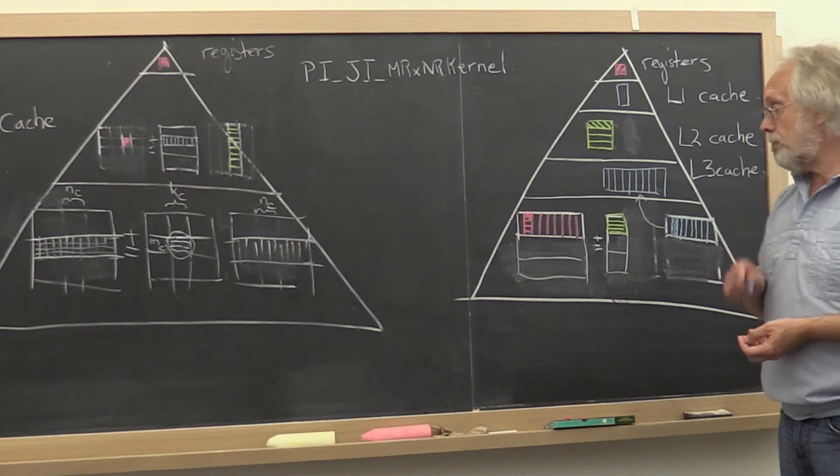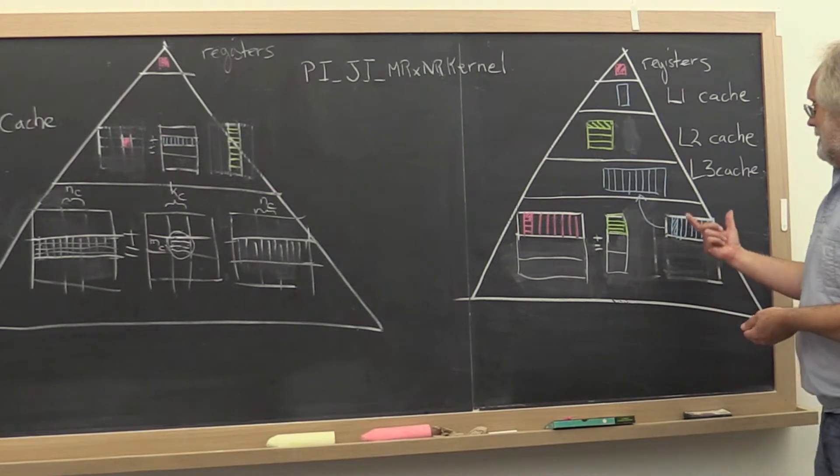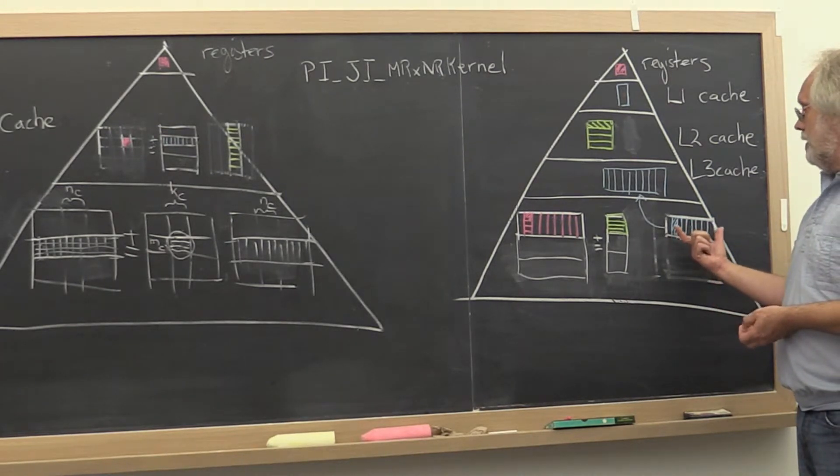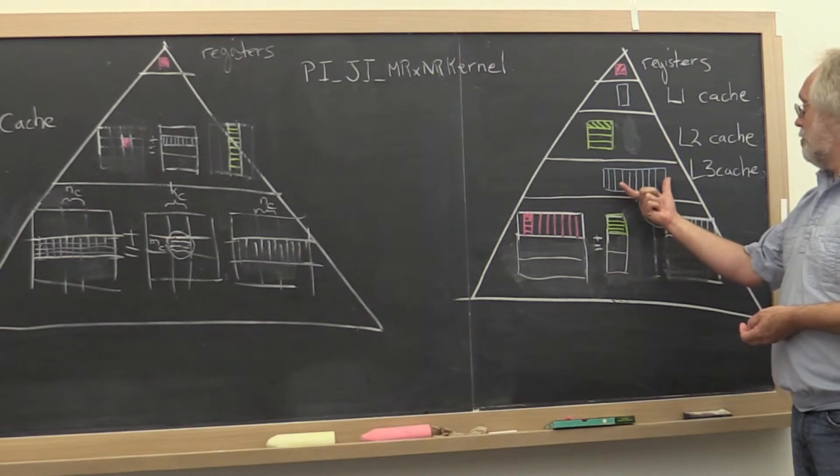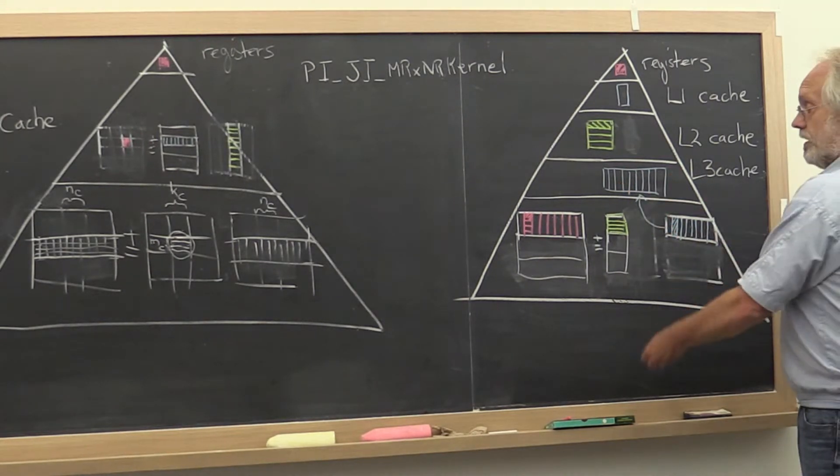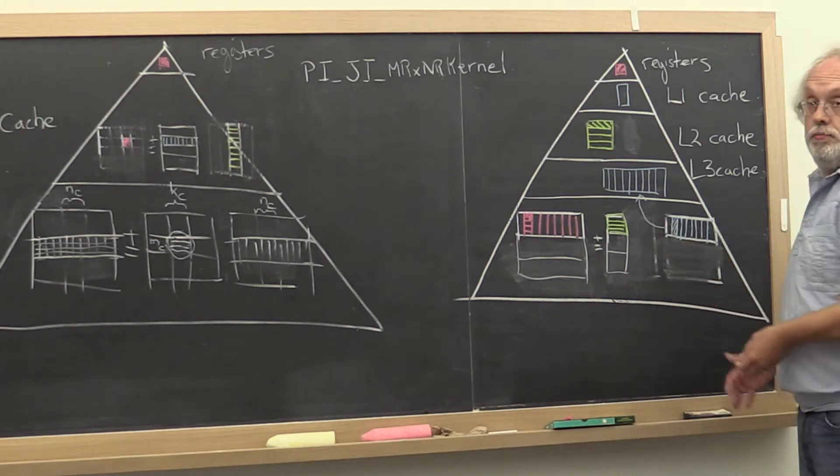Now there's a problem with that. This row panel of B may not fit in the L3 cache if B is very large, if B has many columns.